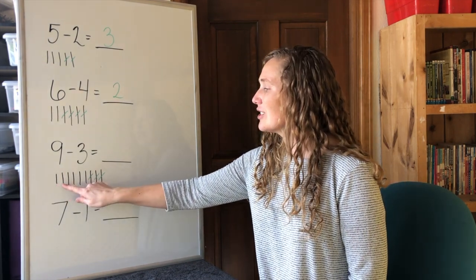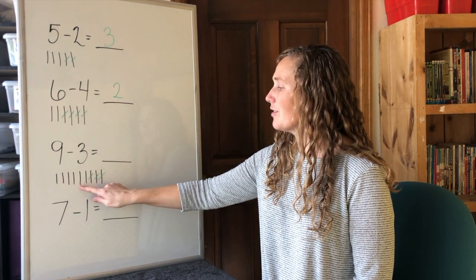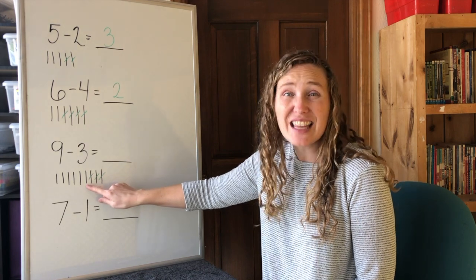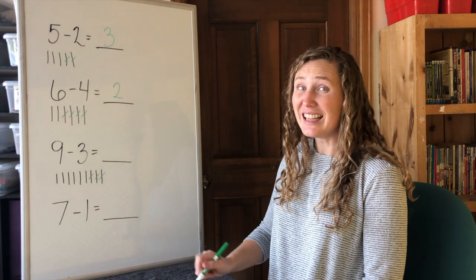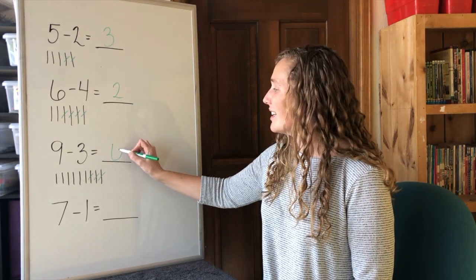One, two, three, four, five, six. There's six left. Nine minus three equals six.